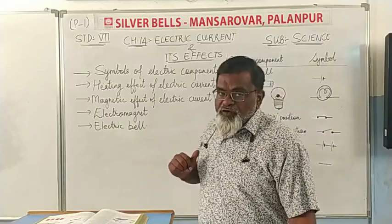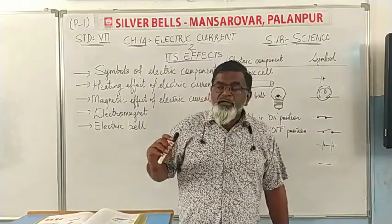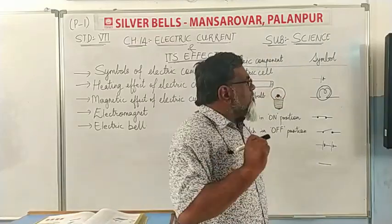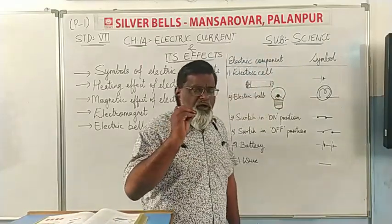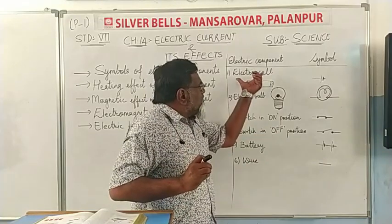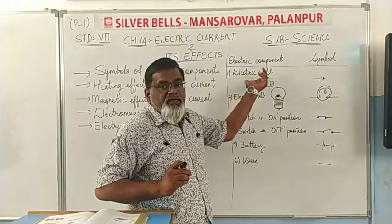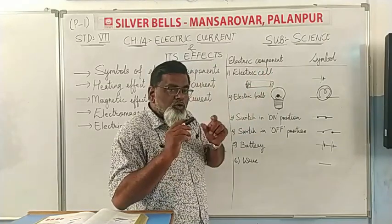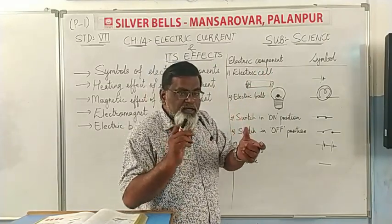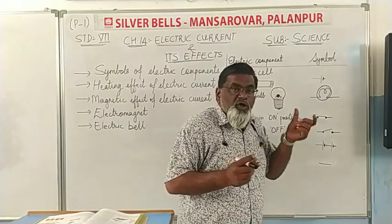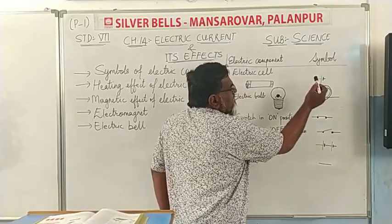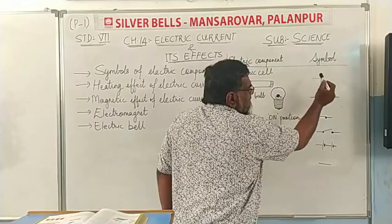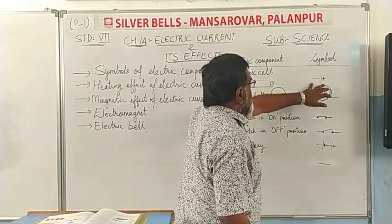So first of all, we are going to study about the symbols of electric components. The source — the electric cell — when we make a circuit, we use the electric cell or the battery. The symbol of the electric cell is a small thin line and a thick line.